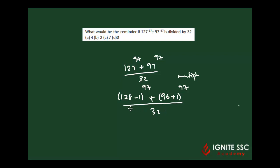128 divided by 32 leaves remainder 0. In this case we have (-1)^97 plus (1)^97 divided by 32. Now, (-1)^97 is minus 1.